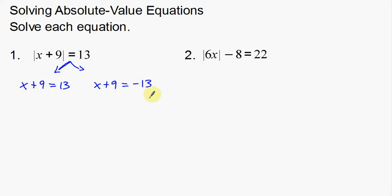Remember, absolute values are distances on a number line. We're looking for a distance that's going to be 13. From 0 to 13 is a distance of 13, but from 0 to negative 13 is also a distance of 13. So you've got to take both into account — that's why we split this up twice.